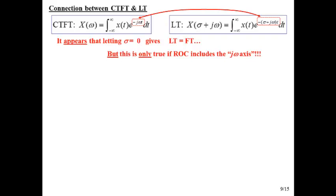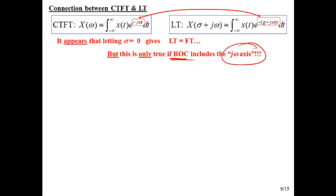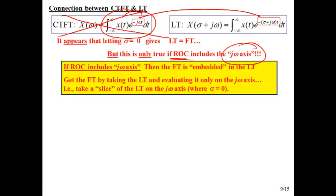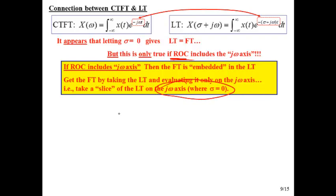There is a connection between the CTFT and the Laplace transform. If we set sigma equal to zero, the Laplace transform degenerates into the continuous-time Fourier transform. But we're only allowed to make this transition when the region of convergence includes the j-omega axis. If the j-omega axis is not in the region of convergence, the integral does not exist and we cannot use the CTFT as a tool. As long as the region of convergence includes the j-omega axis, we can find the Fourier transform by slicing the Laplace transform along the j-omega axis where sigma equals zero.